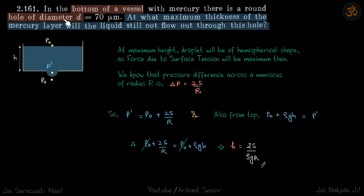In the bottom of the vessel we have a round hole of diameter D. At what maximum thickness of the mercury layer will the liquid still not flow out through this hole?